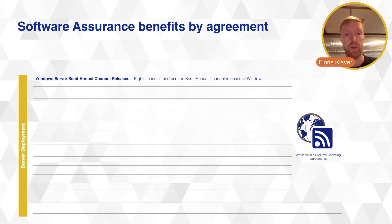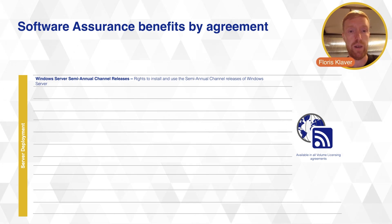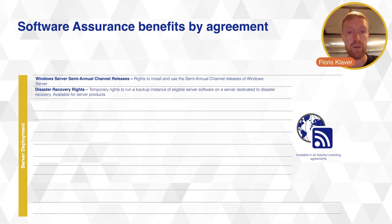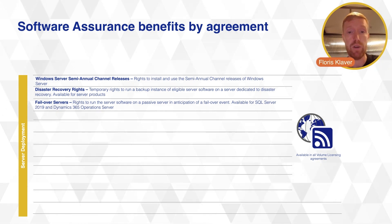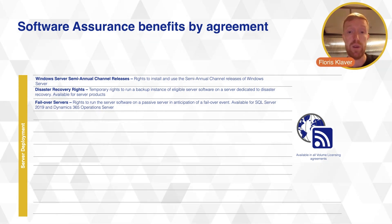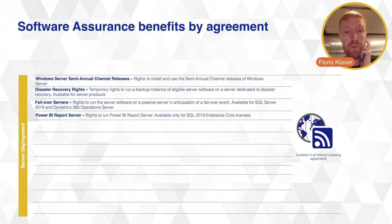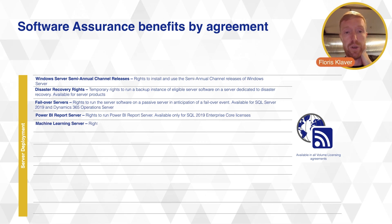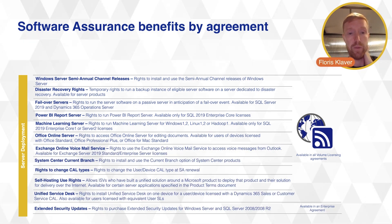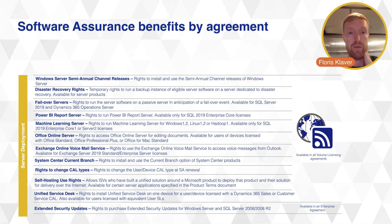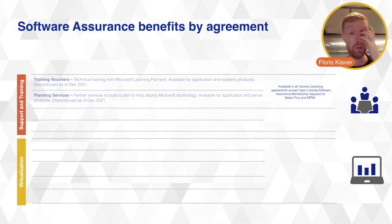For server deployment there are many Software Assurance benefits, such as Semi-Annual Channel releases — though there is now only one channel. There are also disaster recovery rights: a temporary right to run a backup instance of eligible server software, the right to use failover servers or run a service on a passive server in anticipation of a failover event, Power BI Report Server, Machine Learning Server, and the option to access Office Online Server, among many others.